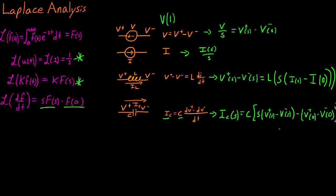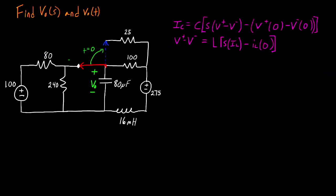For resistors and dependent sources, those are going to be the same in Laplace domain; however, everything is going to be a function of s. Now that we have the new equations for our components, let's move on and apply this to an example problem. Our goal is to find V_o as a function of s, and then use that to take the inverse Laplace transform and go back to the time domain to find V_o as a function of time.